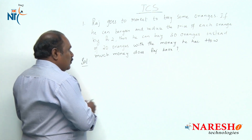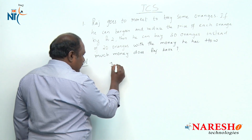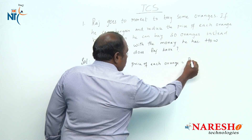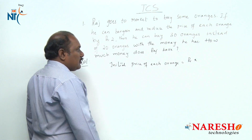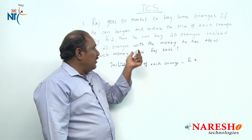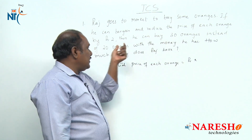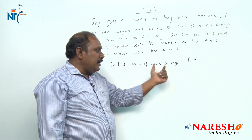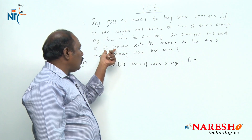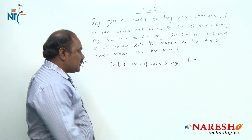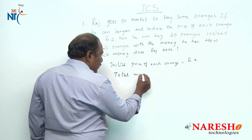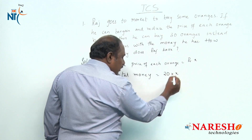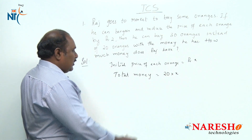Let us assume that the initial price of each orange is rupees x. Here in the information it is given he can buy 30 oranges instead of 20 oranges. That means initially, if the price of each orange is rupees x, then he can buy only 20 oranges. That means the total money spent on oranges should be equal to 20 into x, that is 20x.